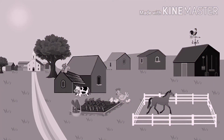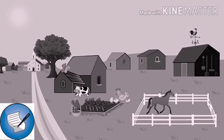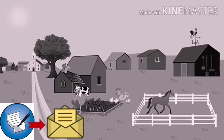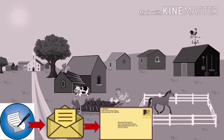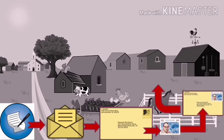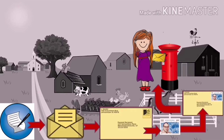If we want to post any letter, first we write our message on a paper. Then we put this letter inside an envelope. Then we write the address on that envelope — the address of the person we want to send the letter to. Then we buy a stamp from the post office and stick it on the top right side of the envelope. Then we drop our letter in the letter box, which we also call a post box or mail box.